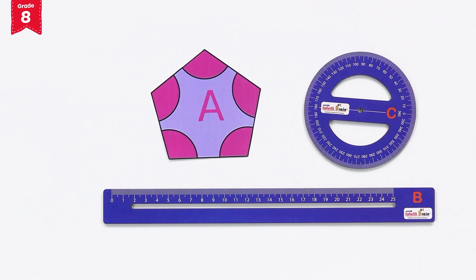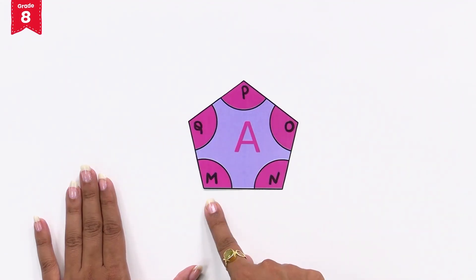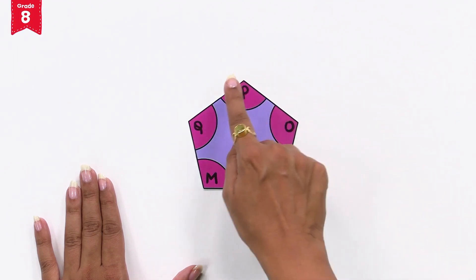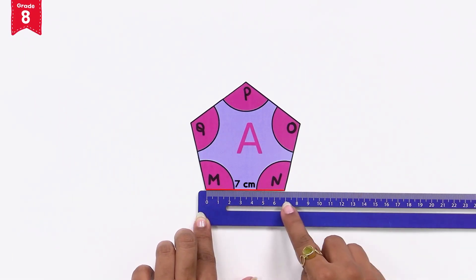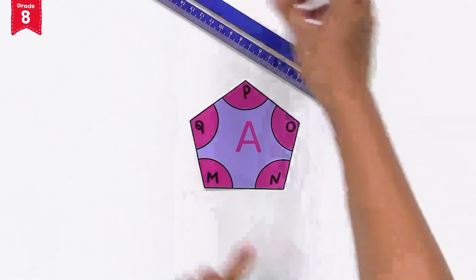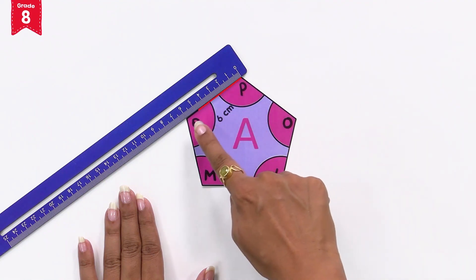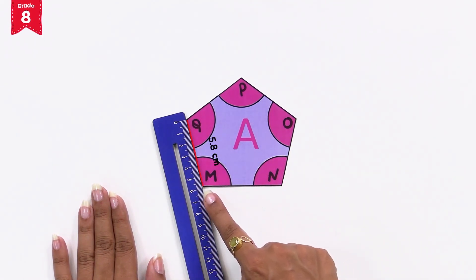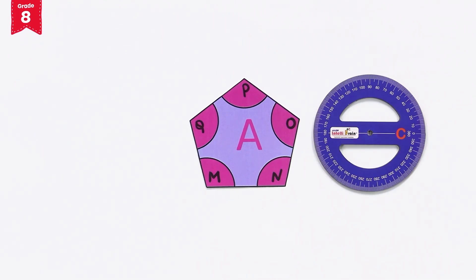Keep the ruler and protractor aside. Let's mark the vertices of this pentagon card A as M, N, O, P, Q. Now let's measure each side. Side MN is 7 centimeters, side NO is 5.8 centimeters, side OP is 6 centimeters, side PQ is 6 centimeters, and side QM is 5.8 centimeters. Note that all the sides are not equal.